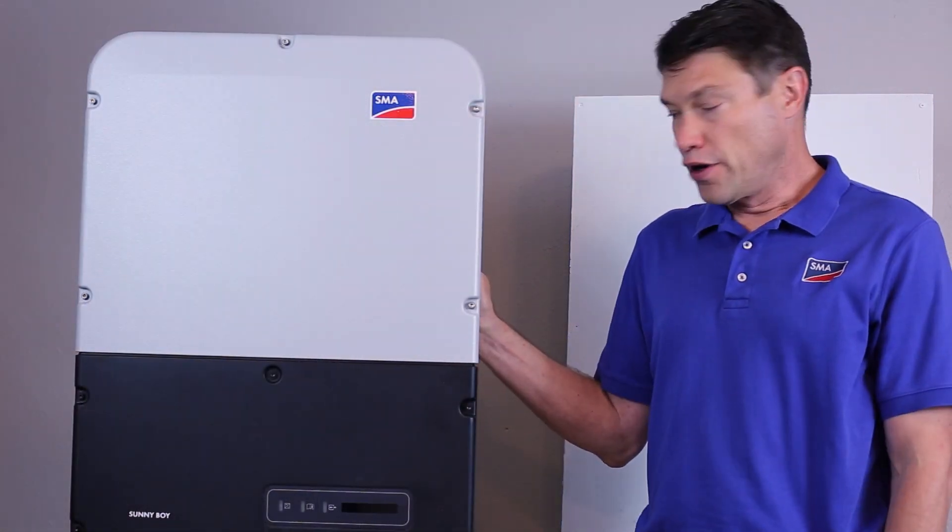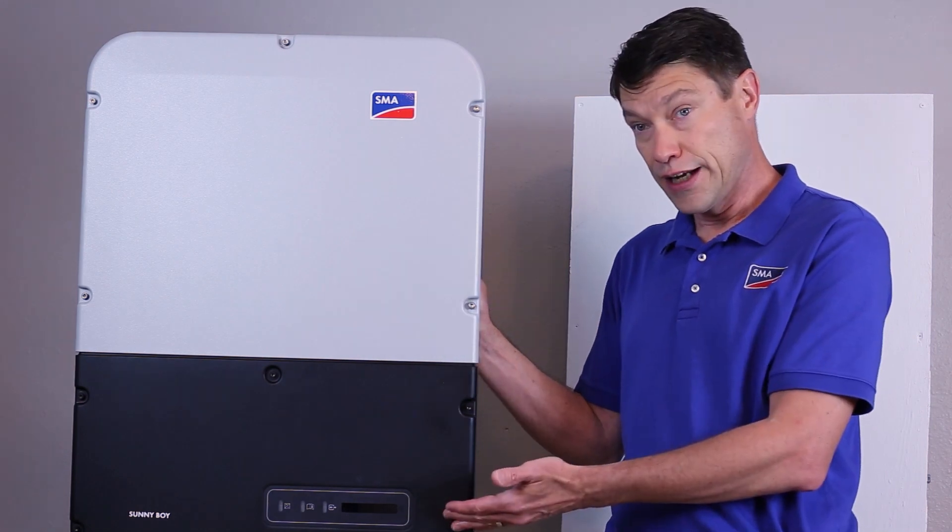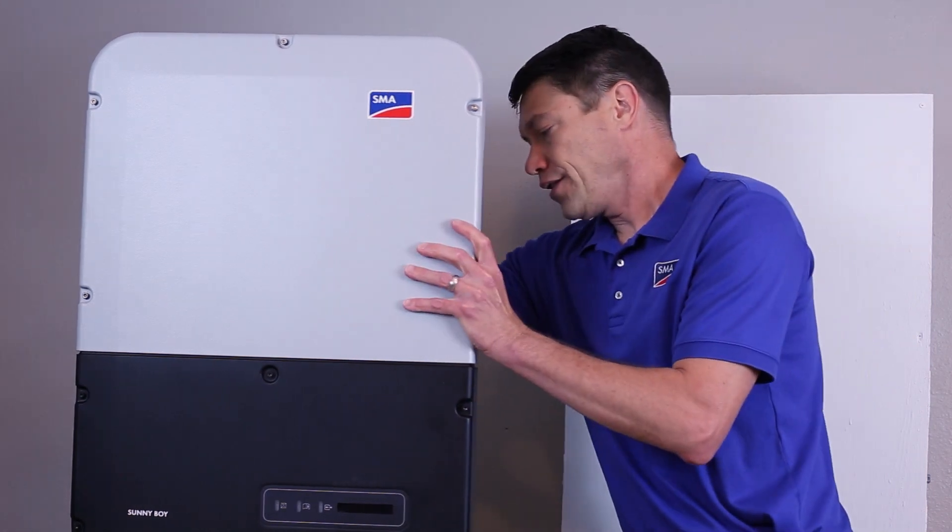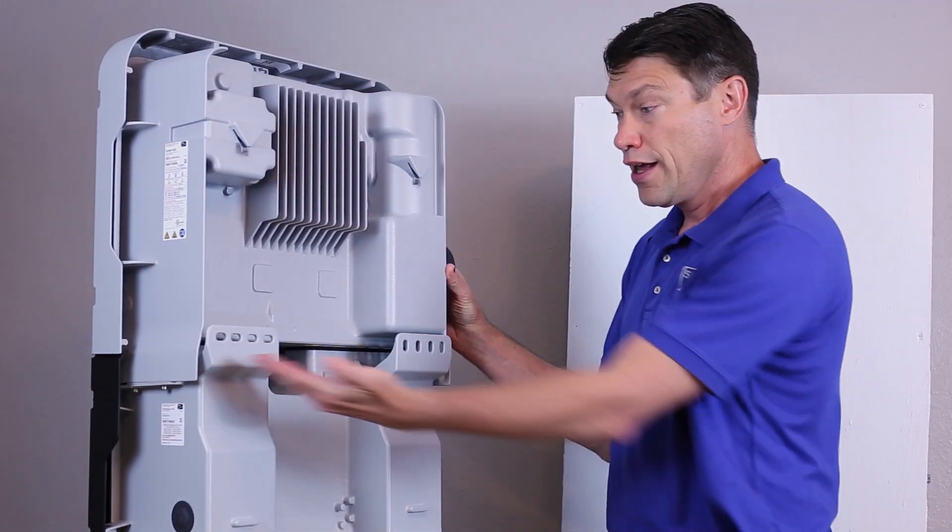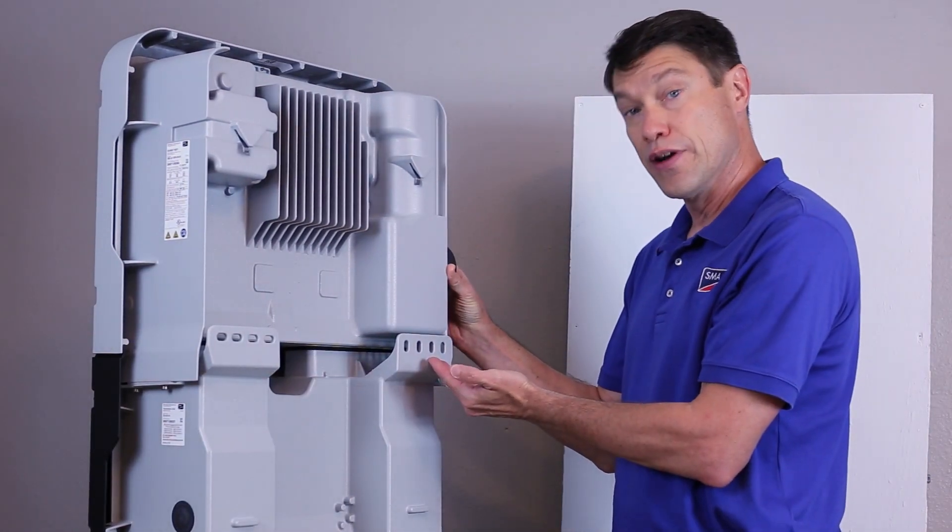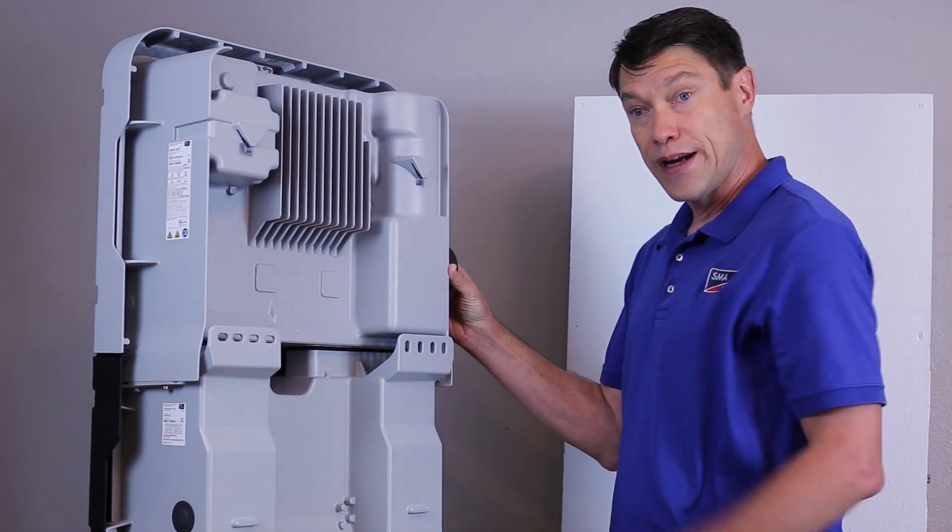To install the inverter, we're going to separate the power unit from the connection unit. And in fact, if we look at the back of the inverter, the hardware for mounting is built right into the connection unit body. So let's go ahead and separate these two sections.